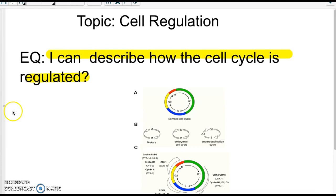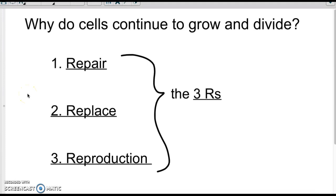All right, so just to recap and review, why do cells continue to grow and divide? Well, for three reasons, the three R's. They either repair themselves from damaged tissues or cells, they might replace old cells or cells that aren't working anymore, and they might reproduce new cells if you're growing from, like, a child into an adult.